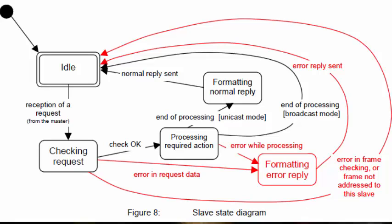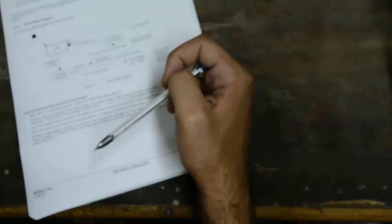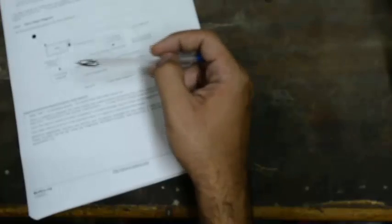If the slave discovers an error in the message — such as a framing error or a CRC error — it processes the error, stores the error state, and returns to idle. However, if the error is within the message content, for example if the master sent an unsupported request, the slave is allowed to respond with an exception response, informing the master that it cannot support the requested action.